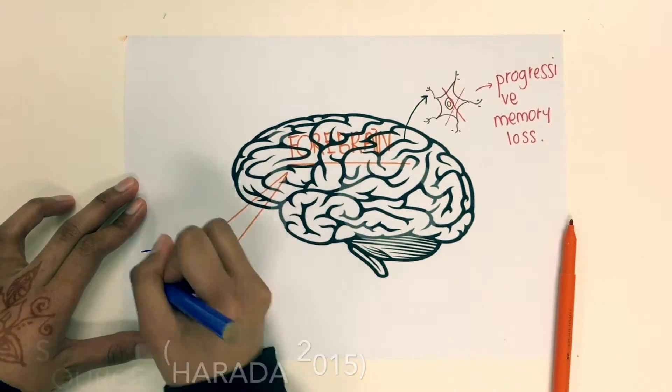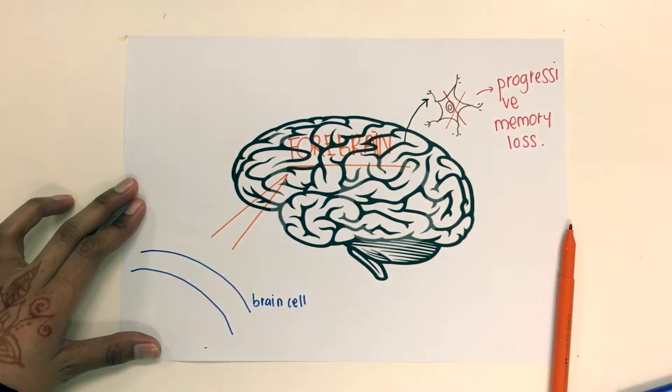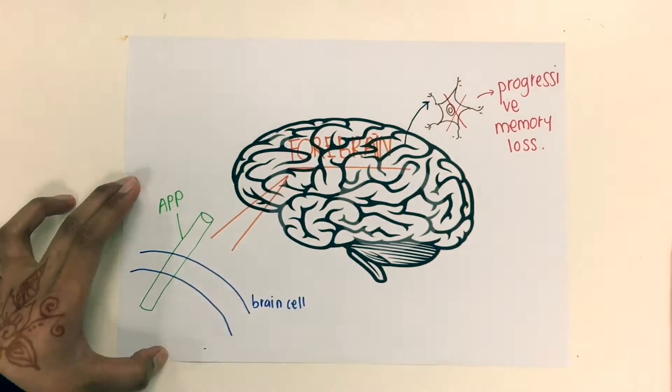In brain cells, there are integral membrane proteins that is called amyloid precursor protein, or for short APP.